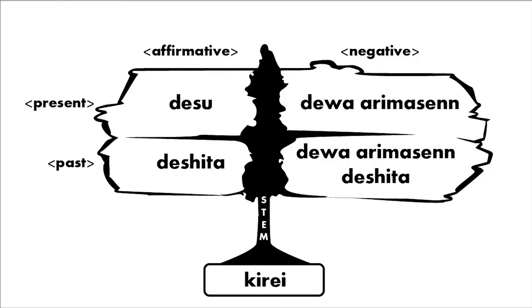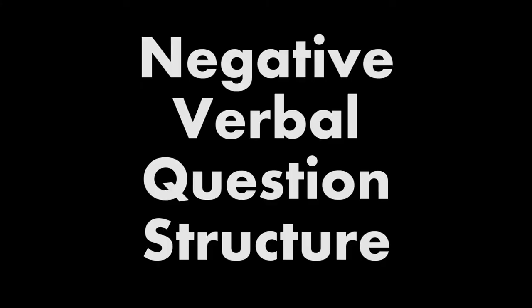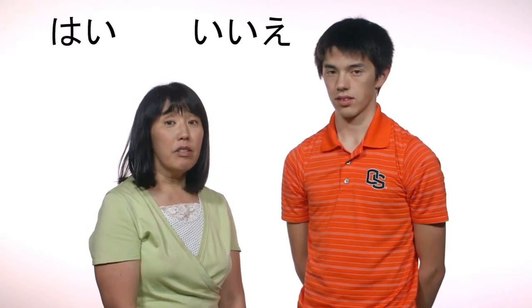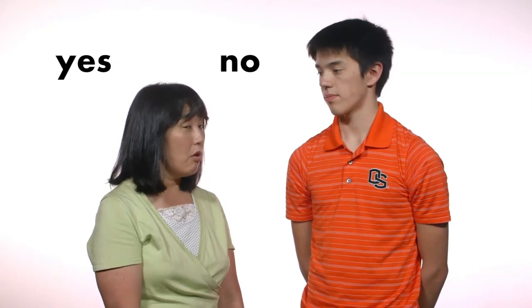My name is Etsuko, and I am Masaru. Adjective sentences. During this session, we will cover adjective sentences. Are adjective sentences like 'it's delicious,' 'it's big,' or 'it's good?' Yes, that's right. They are used to describe everything, including animated things like human beings. Let's talk about adjective sentences then.